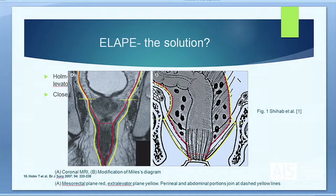Holm therefore reintroduced this with a paper describing ELAPE, an extra levator dissection, which closely mirrors the operation as described by Miles. The red line on the diagrams represents the mesorectal plane and the yellow line the dissection plane of the extra levator.